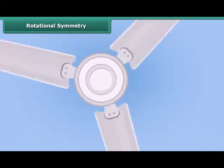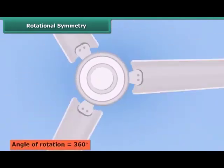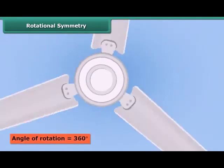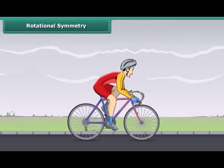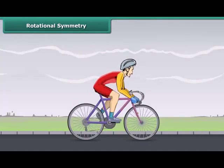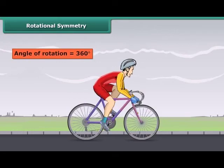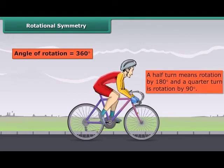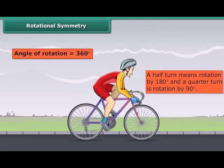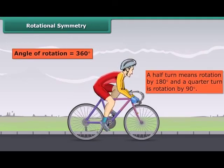The angle of turning during the rotation is called the angle of rotation. If a thing makes a full turn, its angle of rotation is 360 degrees. A half turn means rotation by 180 degrees, and a quarter turn is rotation by 90 degrees.